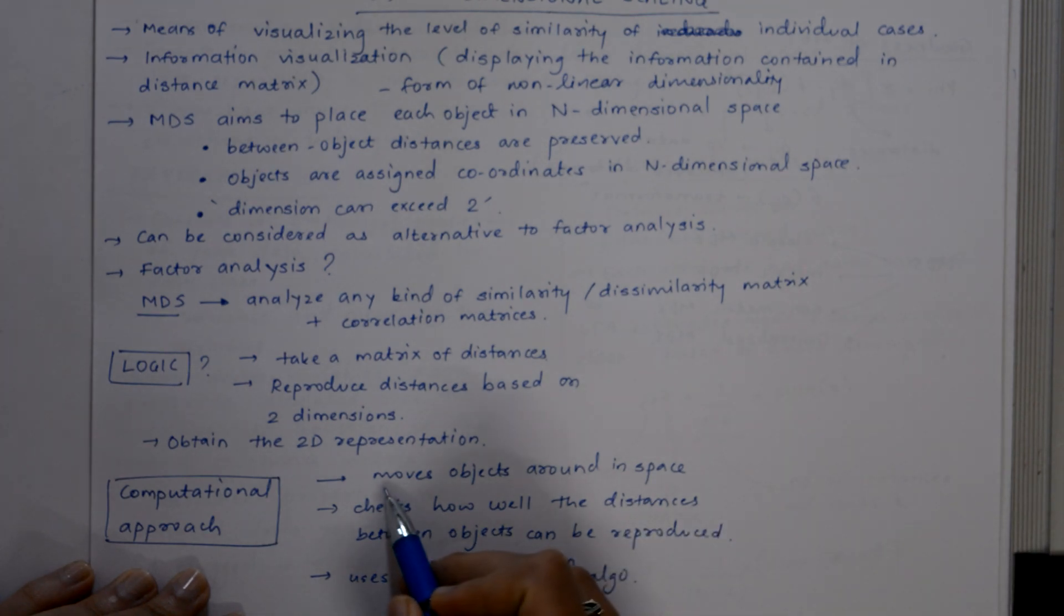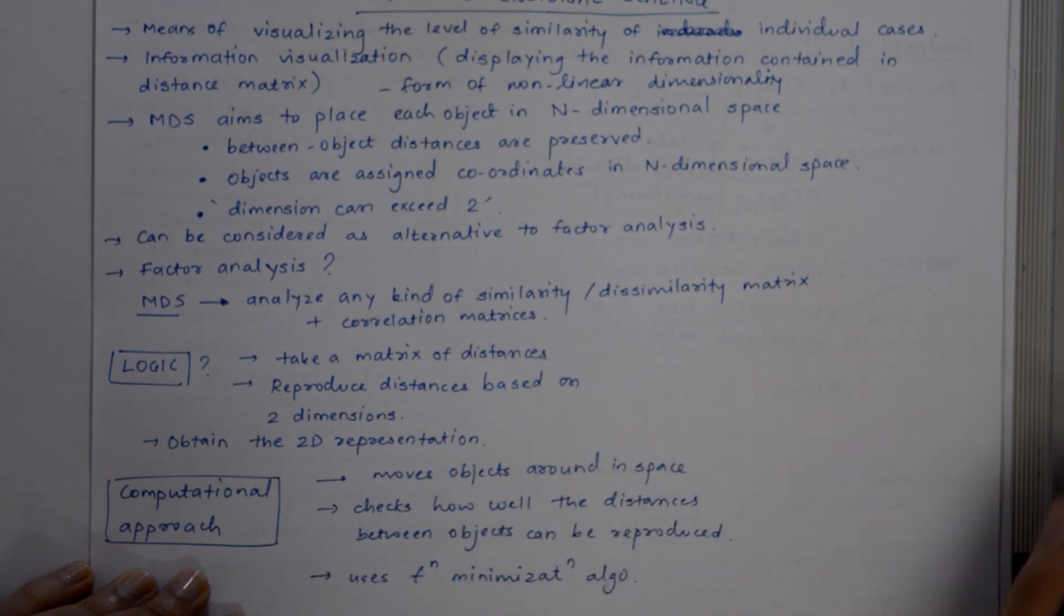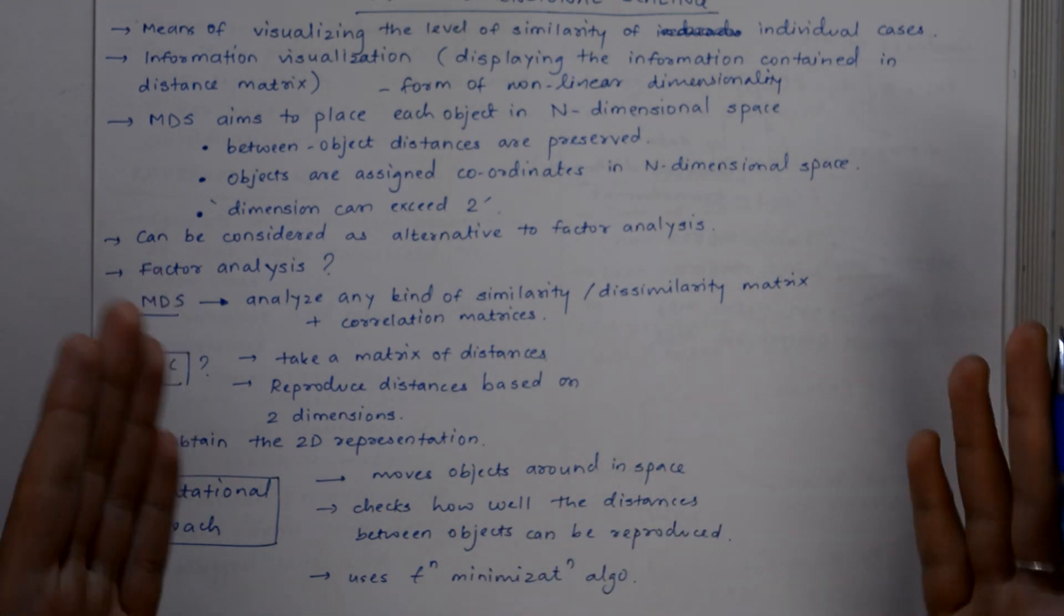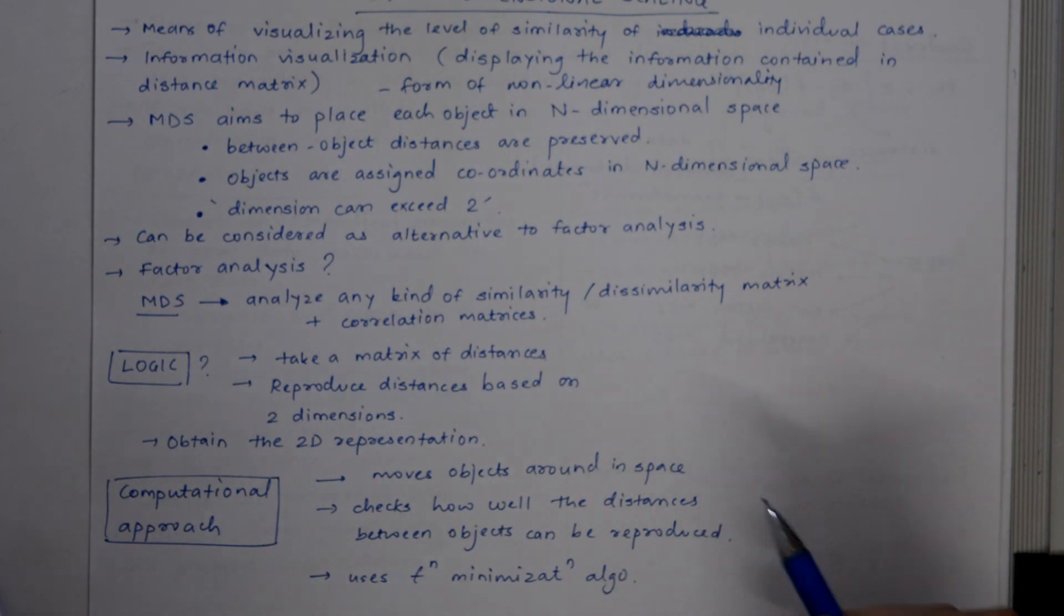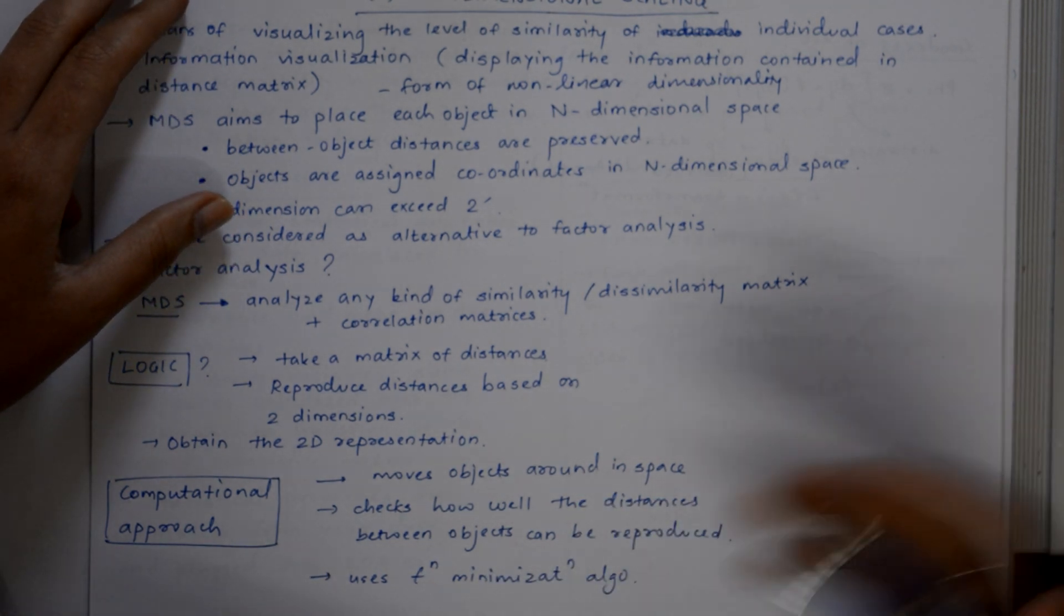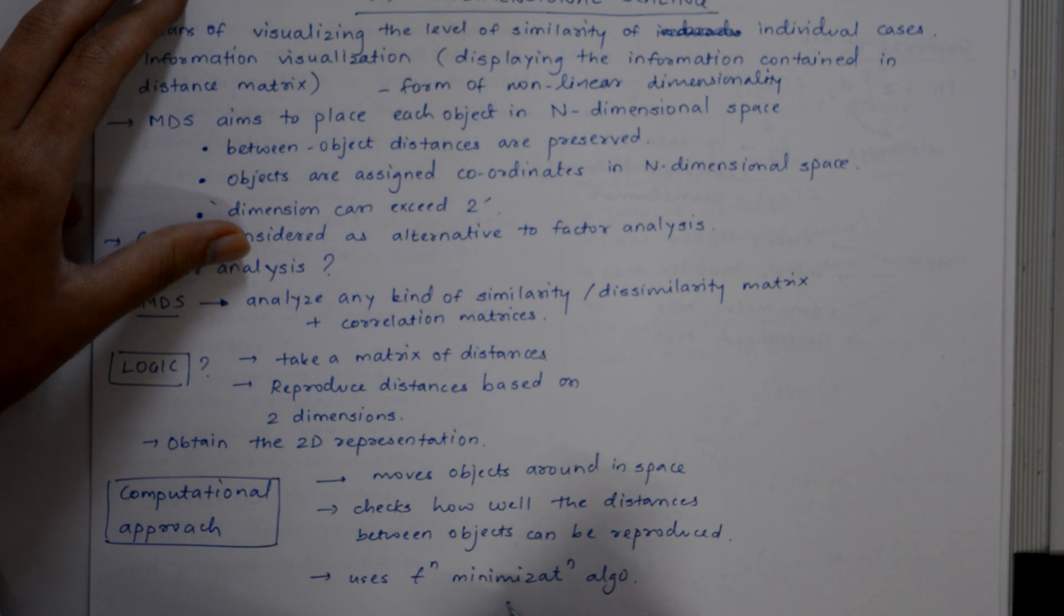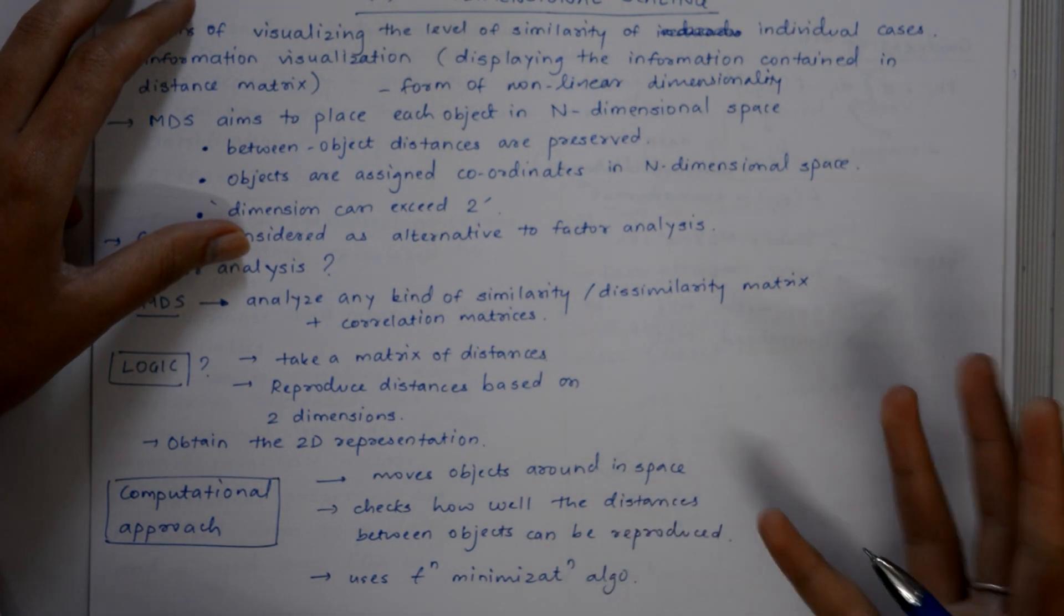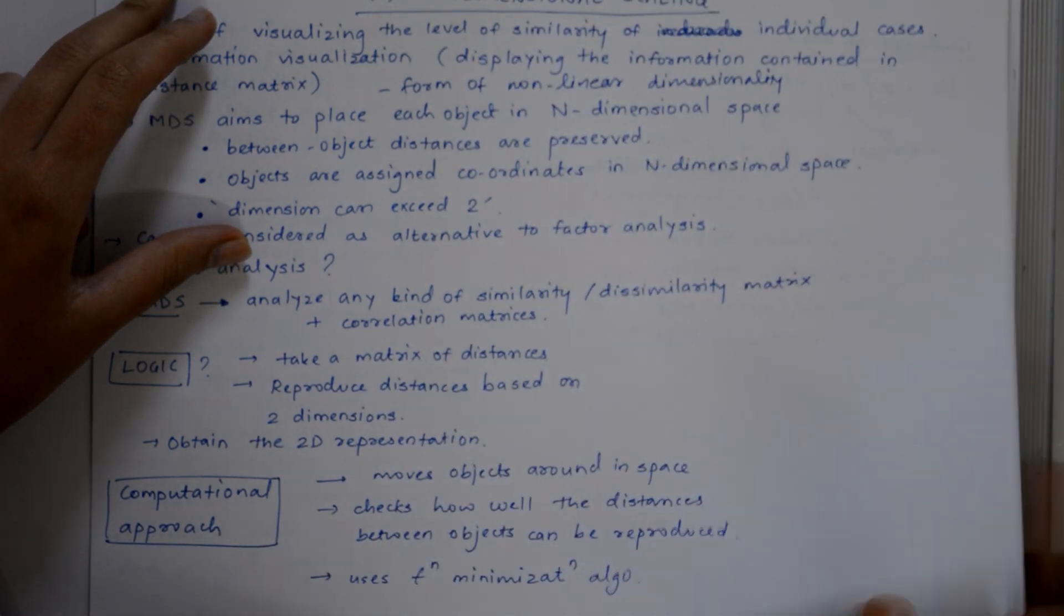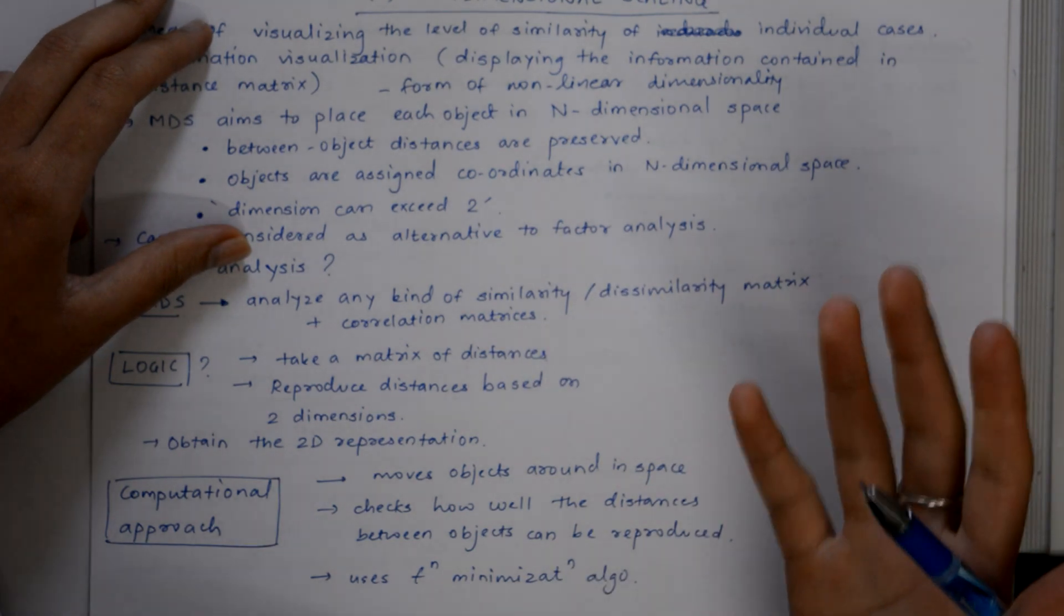It basically moves objects around in space, checks how well the distances between objects can be reduced, and uses a function minimization algorithm that evaluates different configurations with the goal of maximizing the goodness of fit or minimizing the lack of fit.